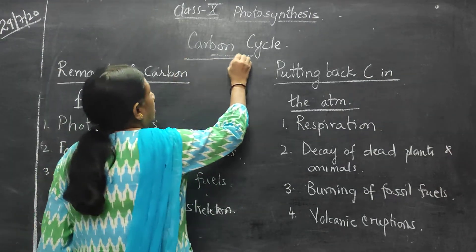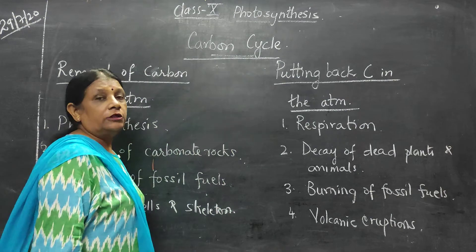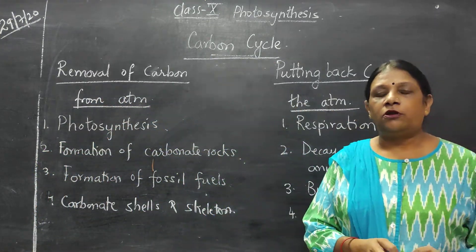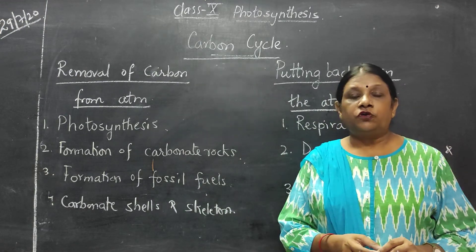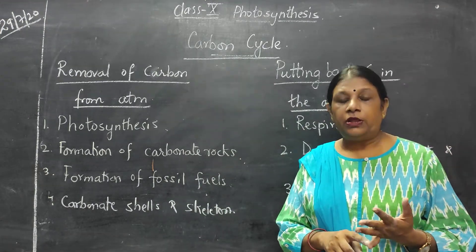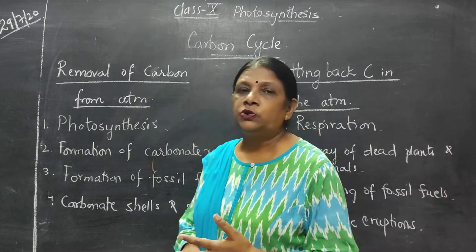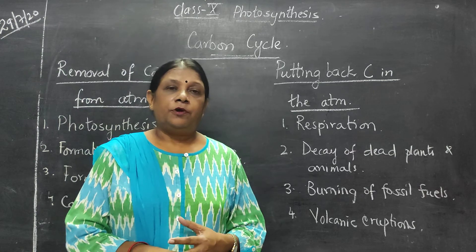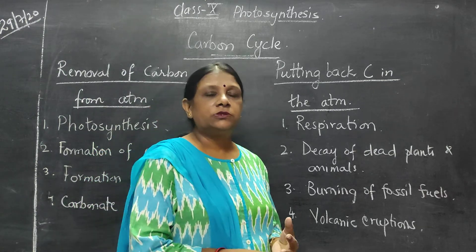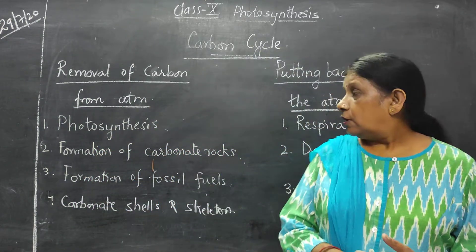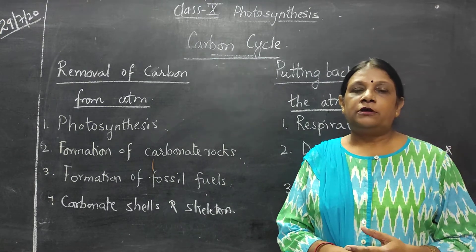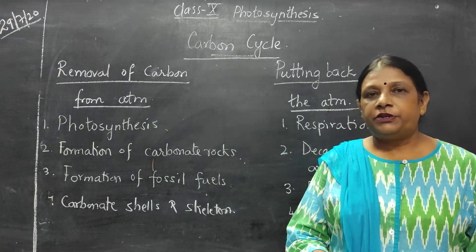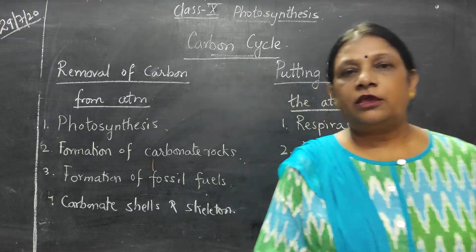This is all about the carbon cycle. There are also certain experiments to prove that different things are necessary for photosynthesis, like chlorophyll, and that starch is produced. These are already given in your textbook. In case of any problem or doubt, you can always call or text me. I hope you have understood the chapter — just try to find out the answers, and in case of any doubt, you are always welcome. Thank you.